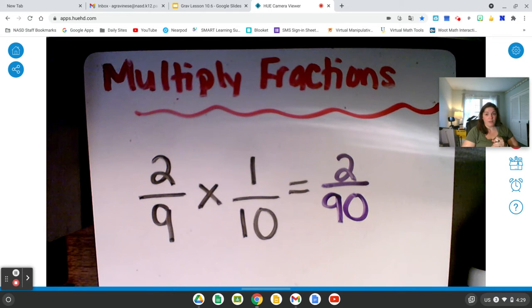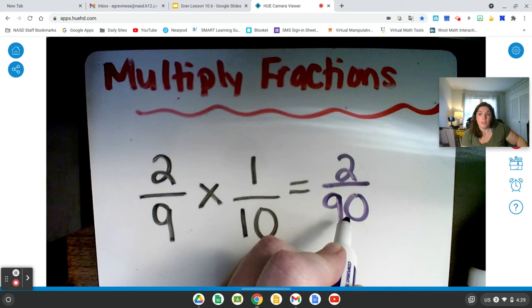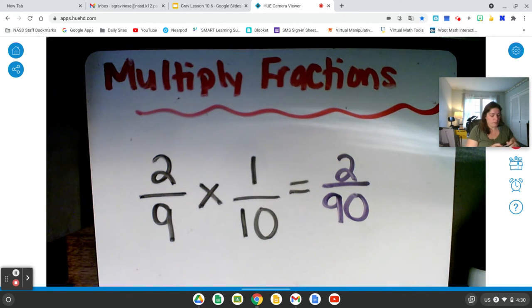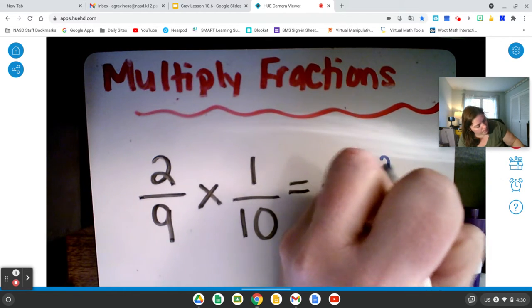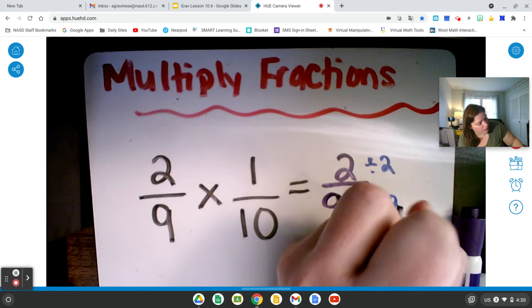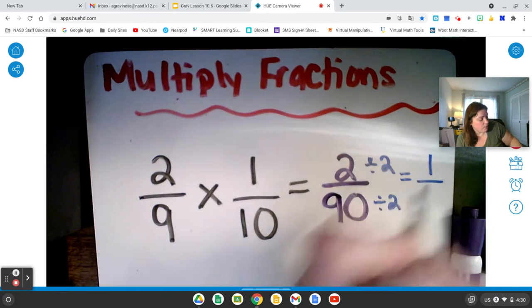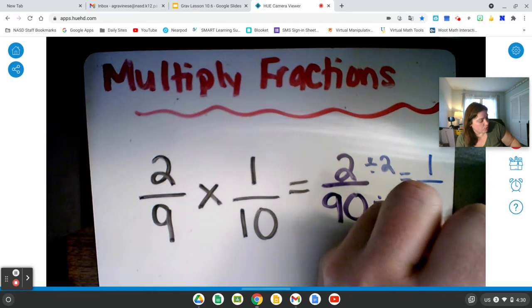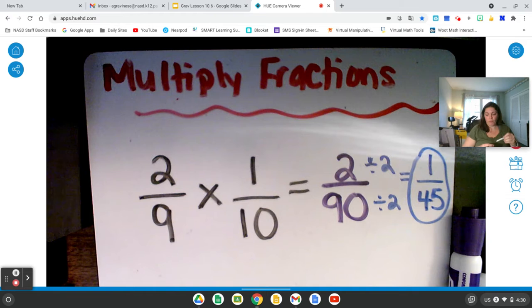Now, I can simplify that fraction. Both 2 and 90 are even. That means that they are divisible by 2. So if I simplify this, I can divide 2 and 90 both by 2. Because 2 is the GCF of 2 and 90. 2 divided by 2 equals 1. And 90 divided by 2 equals 45. So I get 1/45. Not too bad.